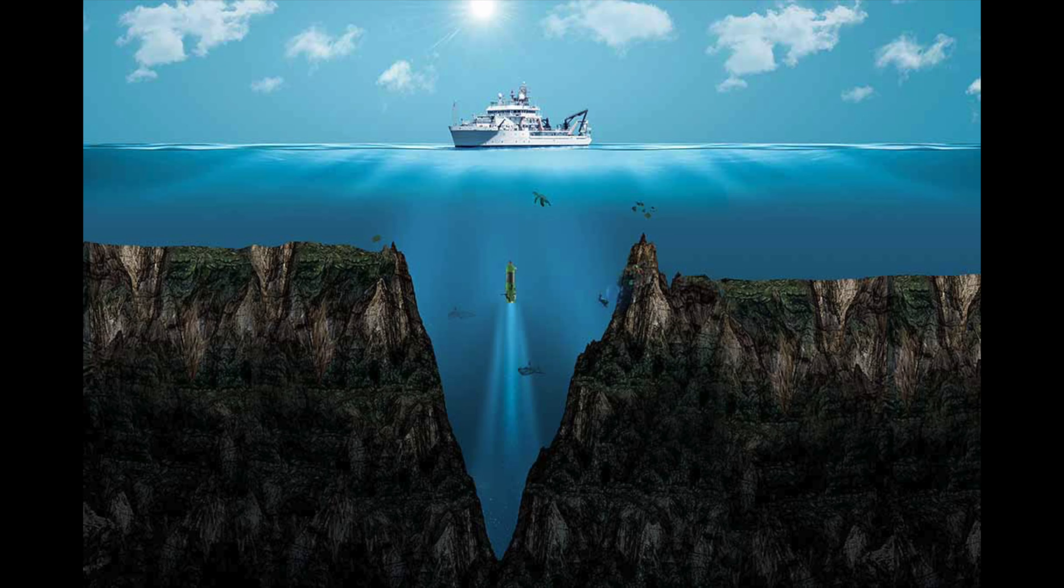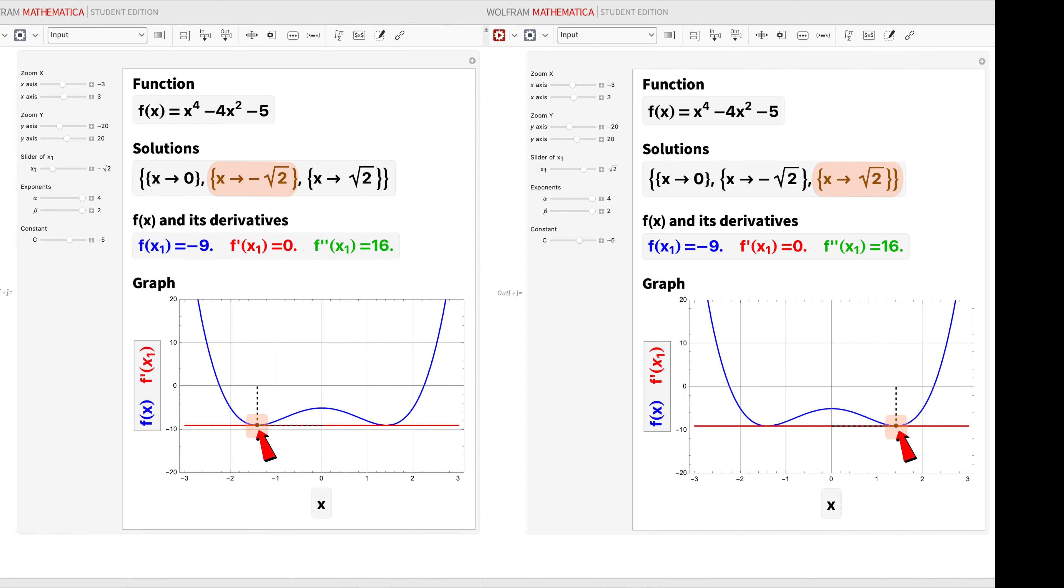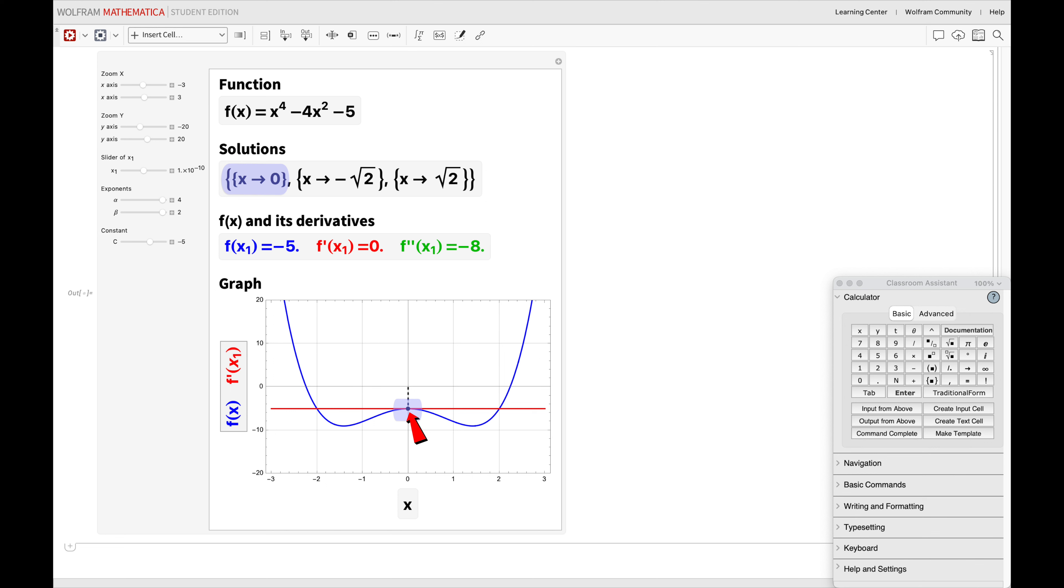Back to our example function f, we can see that both x equal to minus the square root of 2 and x equal the square root of 2 are global minimum points, while x equal to 0 is only a local maximum point, as the function increases indefinitely both before x equal to minus the square root of 2 and after x equal to the square root of 2.